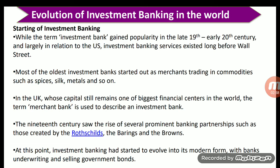Investment banking services existed long before Wall Street. Most of the oldest investment banks started out as merchant trading in commodities such as spices, silk, and metals. In the UK, whose capital remains one of the biggest financial centers in the world, the term merchant bank was used to describe an investment bank. The 19th century saw the rise of several prominent banking partnerships such as those created by the Rothschilds, the Barings, and others. At this point, investment banking had started to evolve into its modern form, with banks underwriting and selling government bonds.